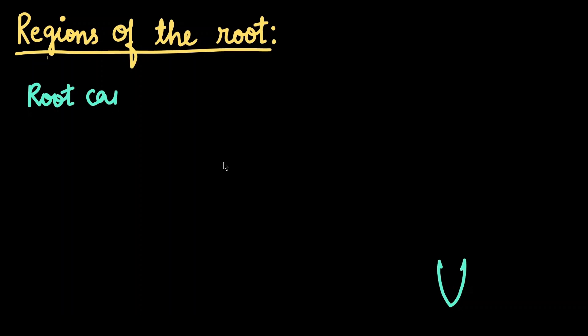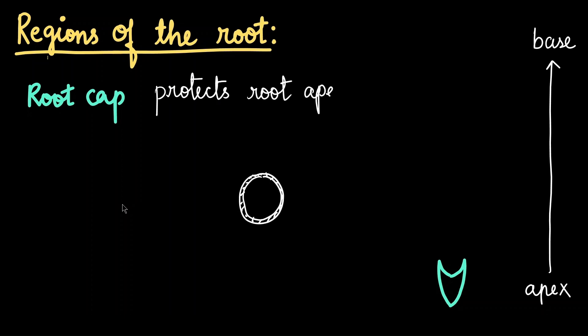The first structure we have is the root cap, which is the outermost part of the root tip. When we take the cross section of a root tip or the root apex, this outer part represents the root cap. Think of it as the helmet for the root tip. It protects this delicate growing tip as it pushes through the soil, navigating around dirt, rocks and other obstacles. So the first function is that it acts like a helmet.